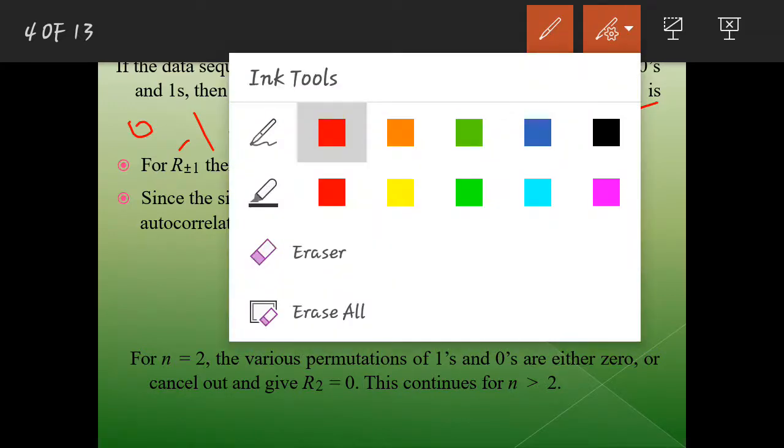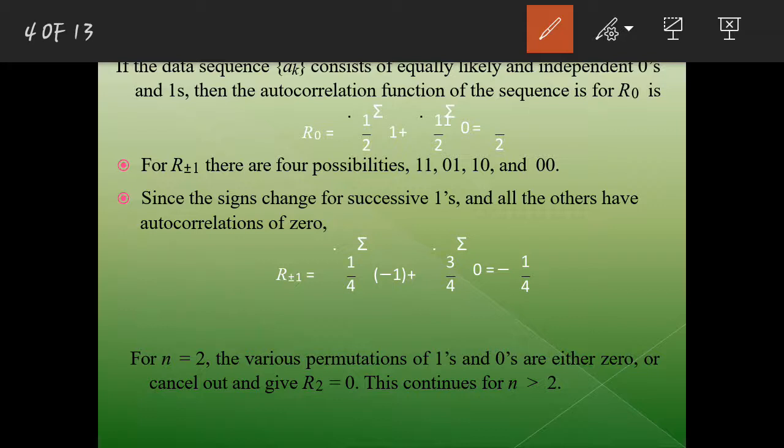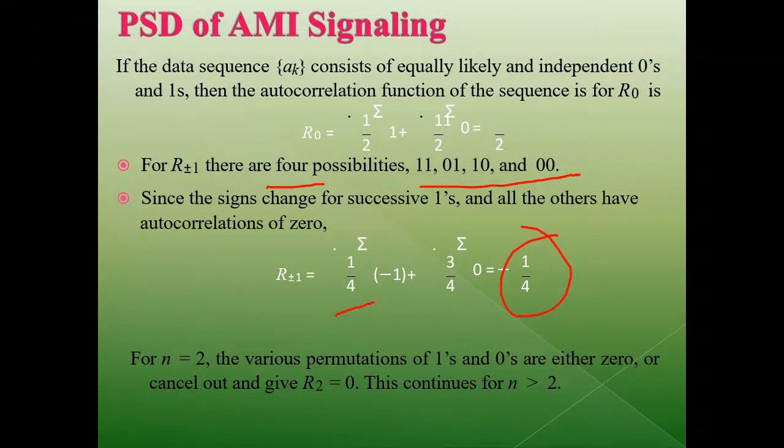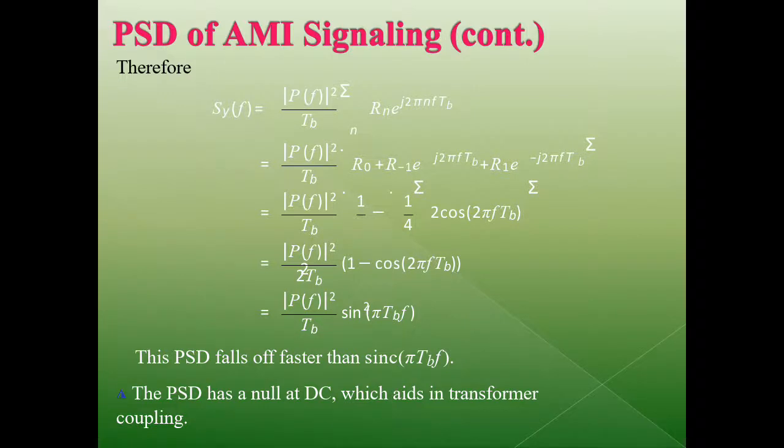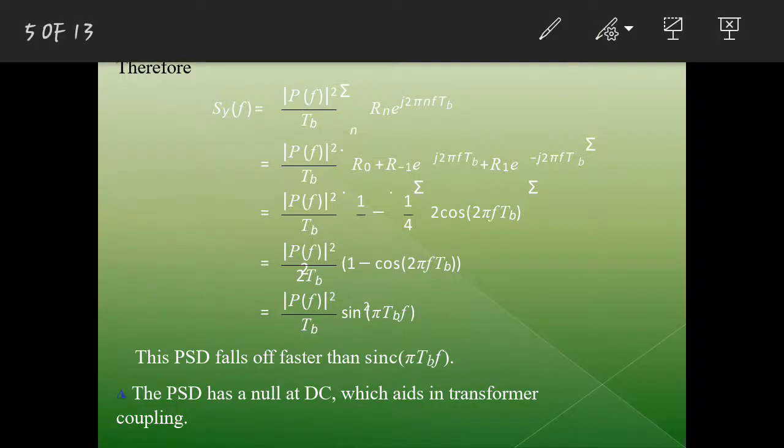Higher order terms we will have it as the combination is 00, 01, 10, 11. There are four possibilities. So you will have it as 1 by 4 and the value is going to be 1 by 4. These are the combinations you can make in finding out the power spectral density. You need to calculate what is the power spectral density of AMI signaling.